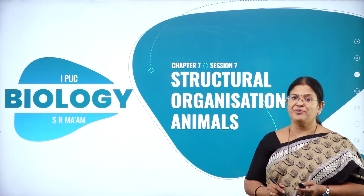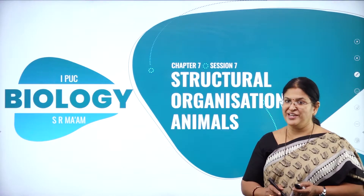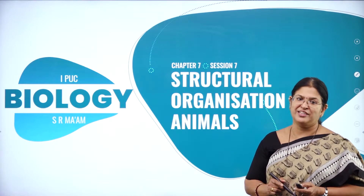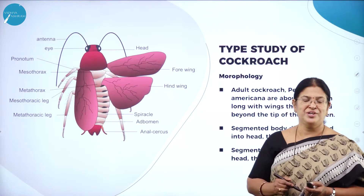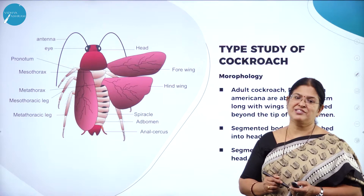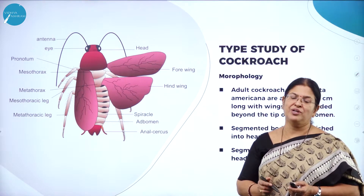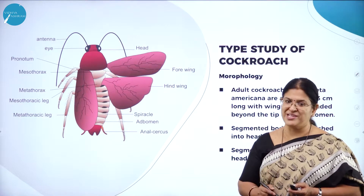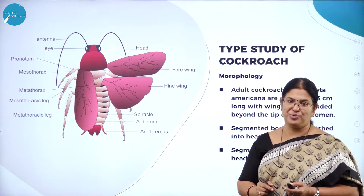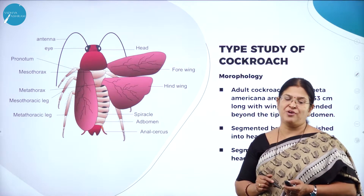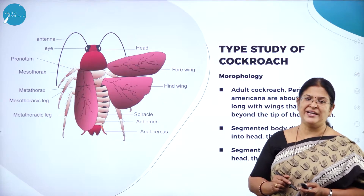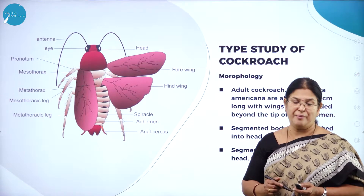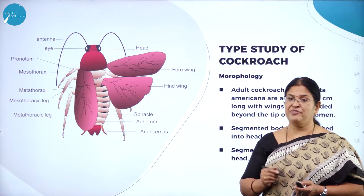In today's session, there is one more very unique animal which we are going to study — the cockroach. So now let us study about this very unique animal and a very common household pest. The scientific name of cockroach is Periplaneta americana, said to be a descendant of America.